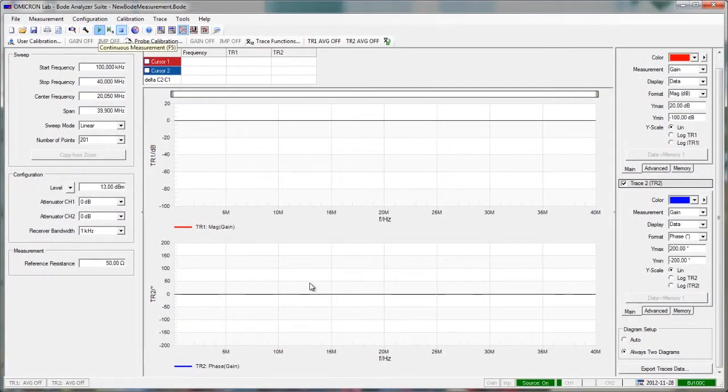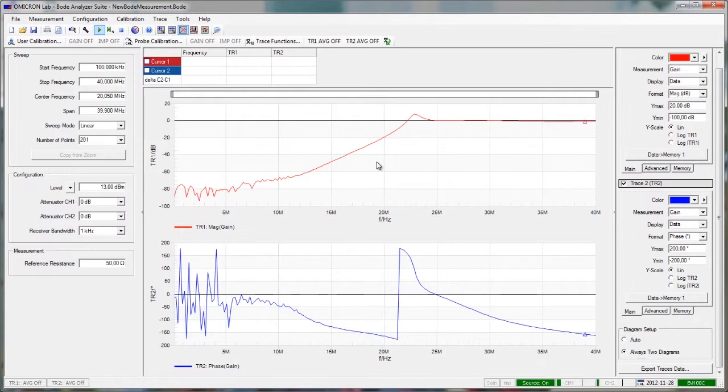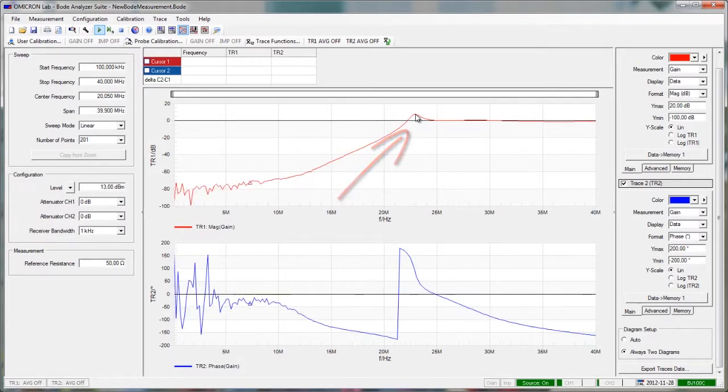We start our measurement and we can immediately see the frequency response of our filter. In the area of the cutoff frequency we see a small elevation. This is caused by the fact that now the input voltage of our filter is taken into consideration for the transfer function calculation and not the source voltage of the Bode 100.